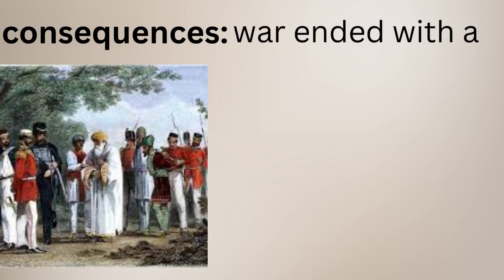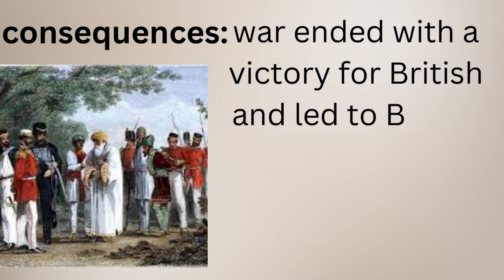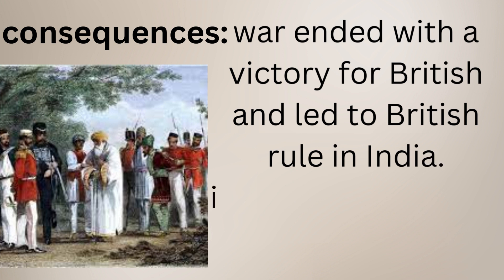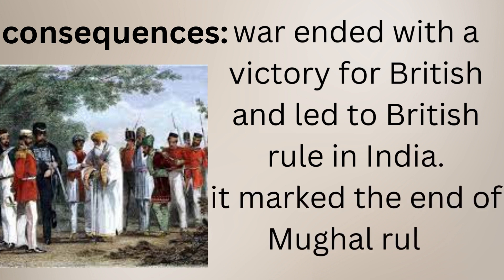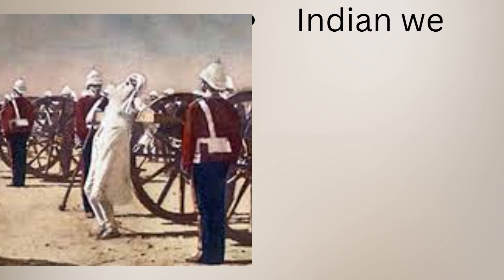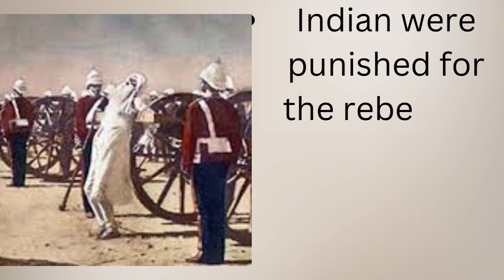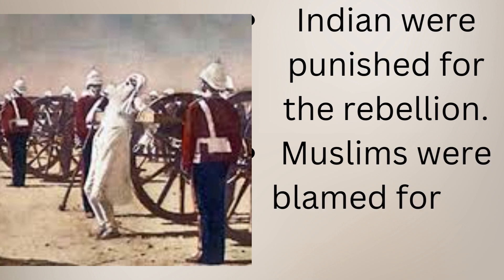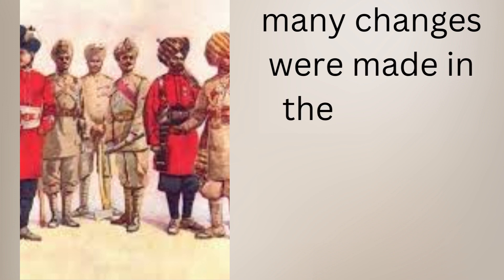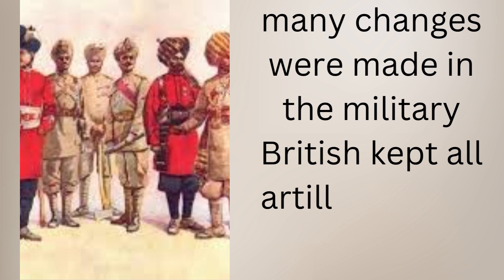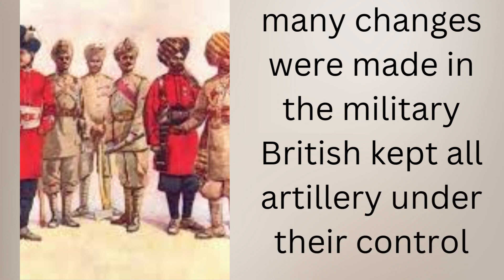Moving forward to the consequences of the war: the war ended with a victory for the British and British rule was established in India. The War of Independence marked the beginning of British rule and the end of Mughal rule in India. Indians were punished for the rebellion and many Indian soldiers were publicly hanged. Muslims were blamed for the war, as the British believed it was an attempt by the Muslims to get their rule back. The British also made many changes in the military — some areas like the Pathans and Punjabis were considered trustworthy, whereas areas like Bengal were not, as they had initiated the war.